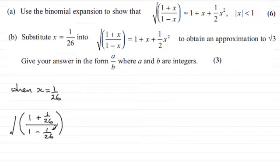We'll clean this part up in a moment, but we're told that this is going to be roughly the same as 1 plus, and in place of x we've got 1 over 26, and then we've got plus a half of 1 over 26 all squared.